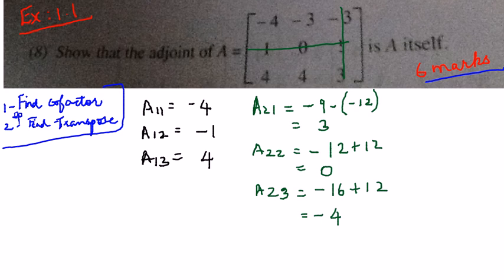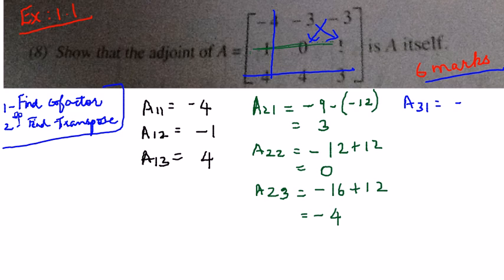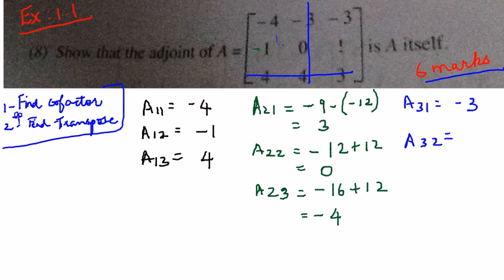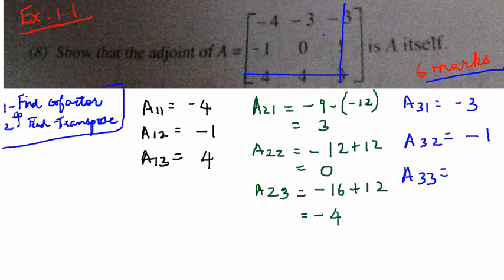Now the third row. For A₃₁, third row first column, we have minus 3×1 minus 0, giving minus 3. For A₃₂, third row second column, we get minus 4 minus of minus 3, which is minus 4 plus 3 equals minus 1. For A₃₃, third row third column, the remaining matrix gives 4×0 minus of minus 3, so 0 plus 3 equals plus 3.